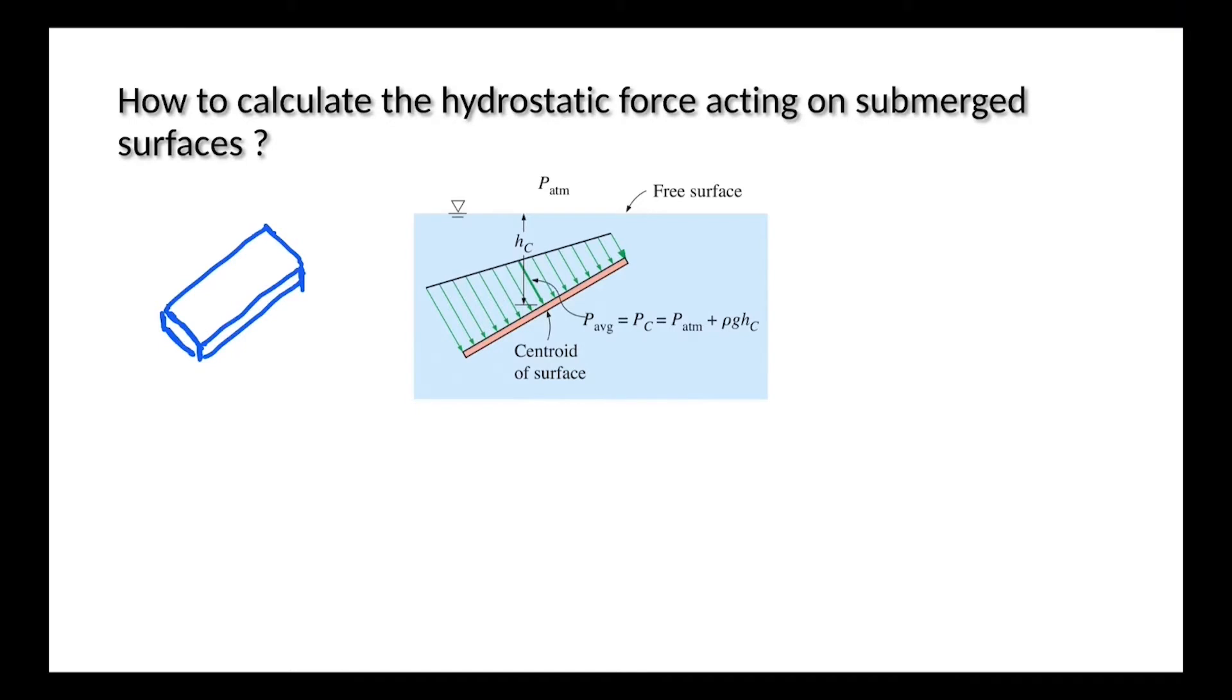We know that every submerged object is under pressure. From high school we remember that pressure, which is known as P, is equal to F over A. So obviously F is equal to P times A. But there is an interesting point about this. The resultant hydrostatic force acting on this plate is a little bit different from what we knew before.